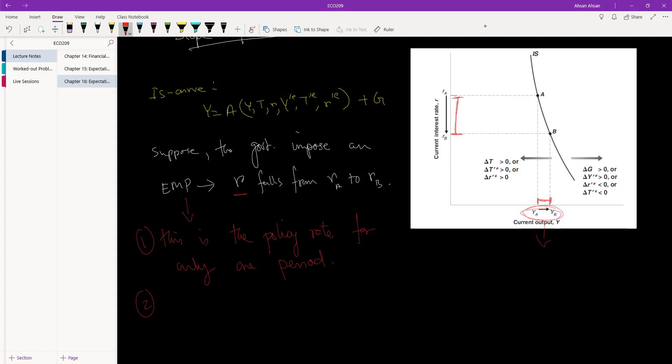But in this case, the multiplier will be small. Because why? Because of course only Y is changing, not future expected income. So effectively, it's the same point.